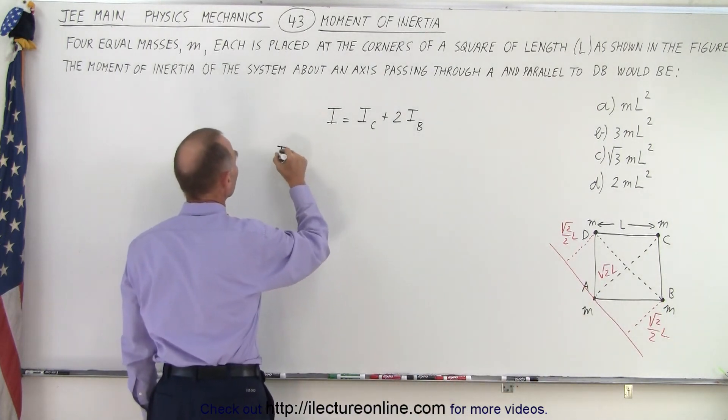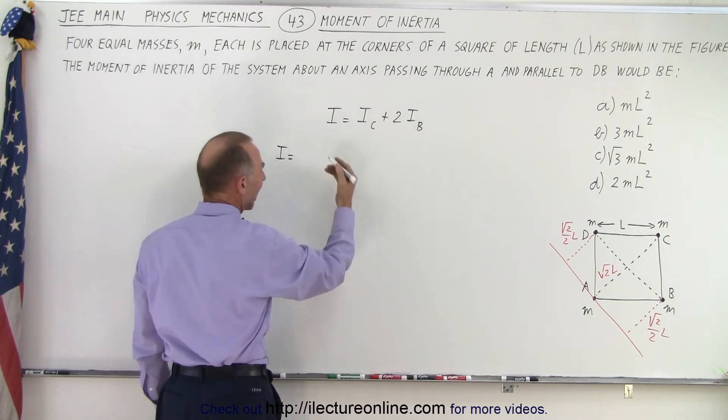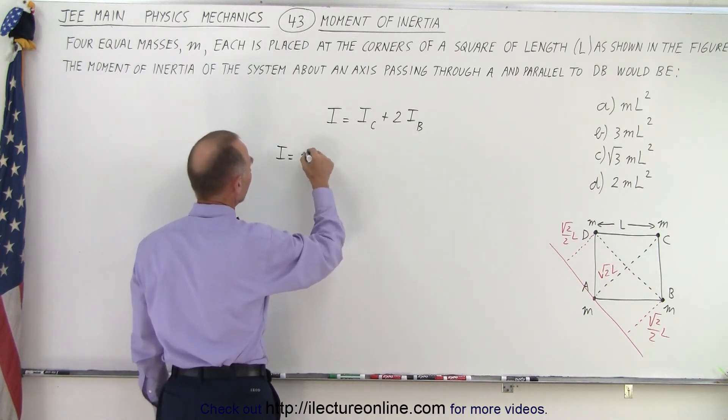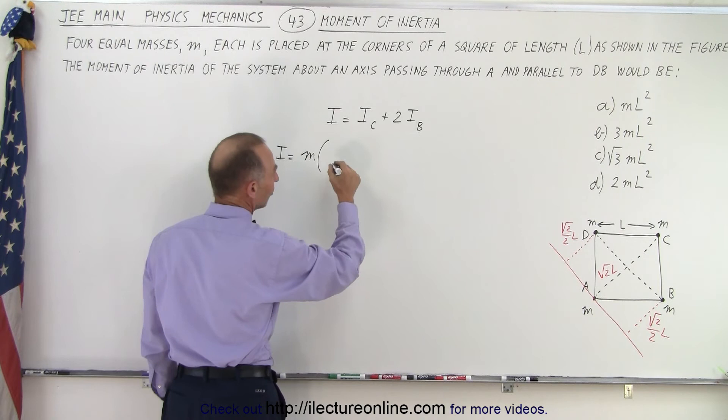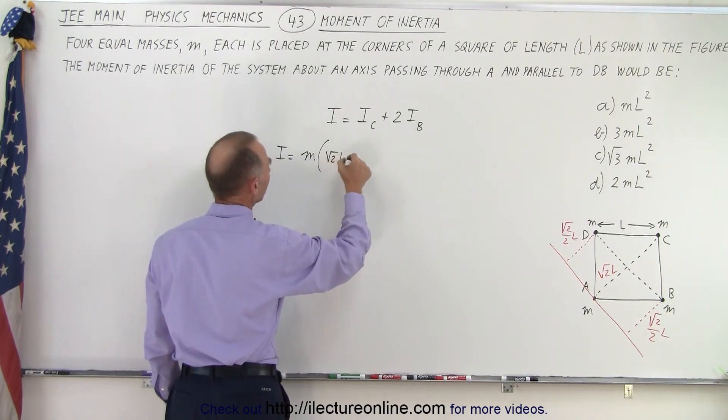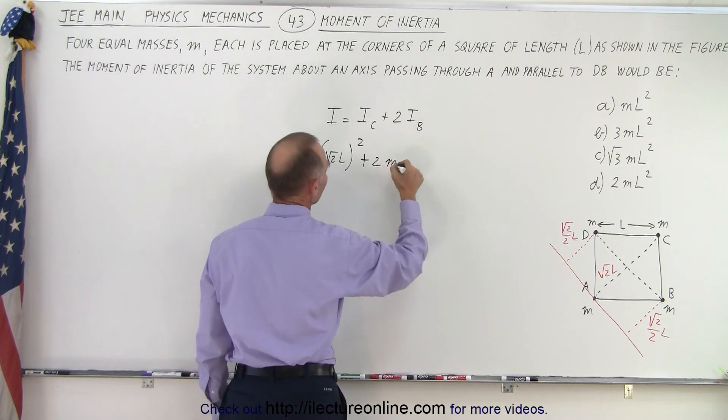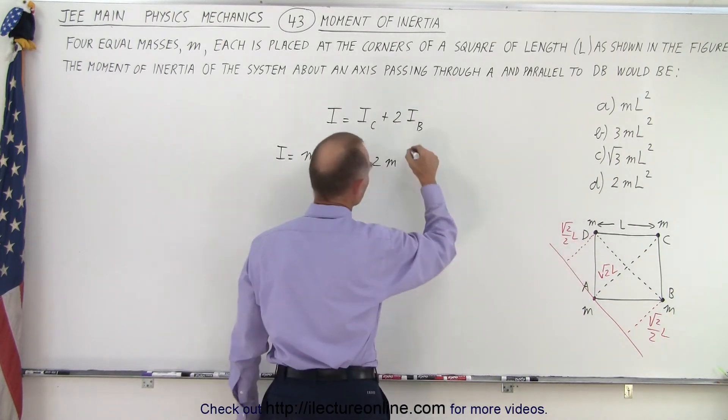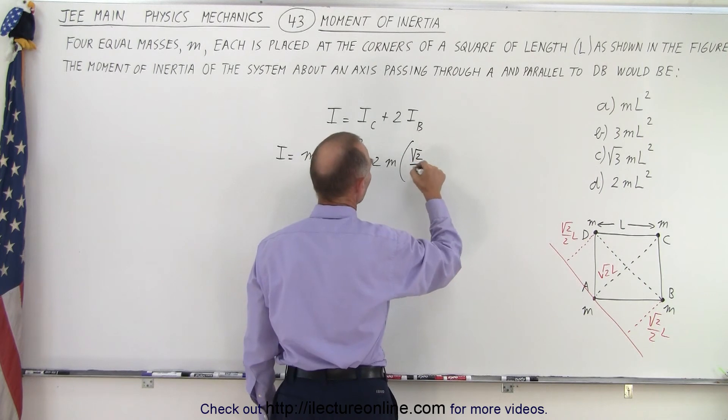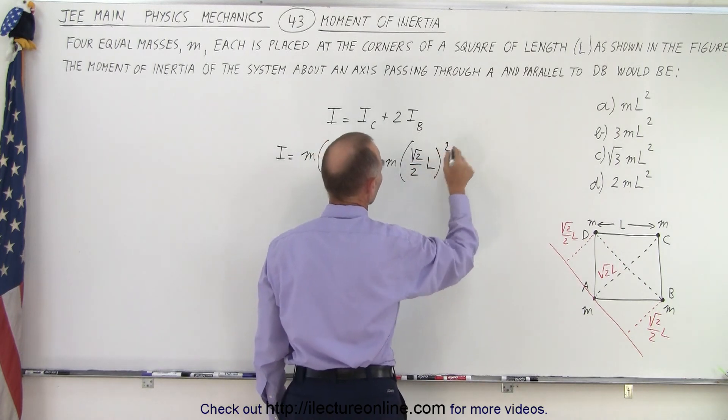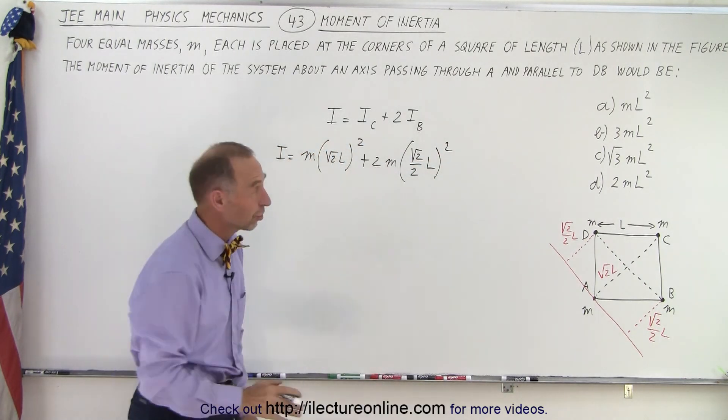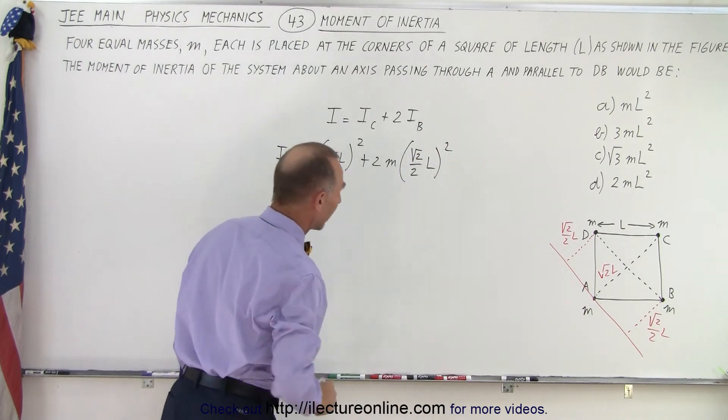That means that the moment of inertia is equal to the mass times the distance squared. So it would be m times the distance, which is the square root of 2L quantity squared, plus 2 times the mass times the distance here, which would be the square root of 2 over 2 L quantity squared. And that would be the total moment of inertia.